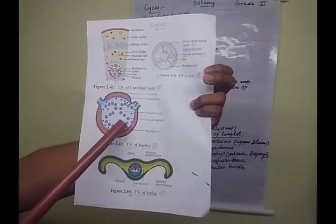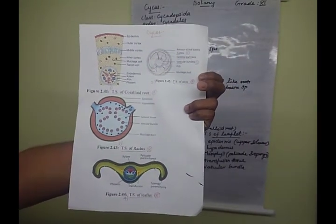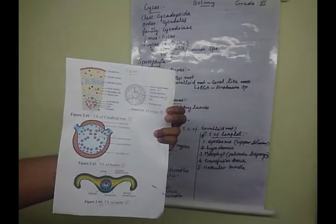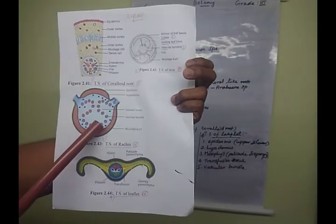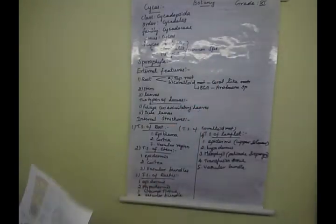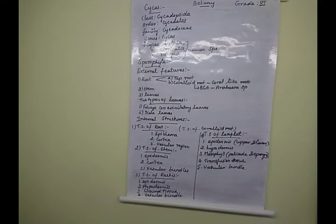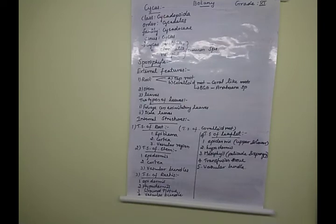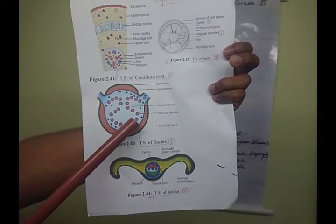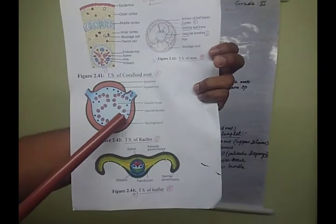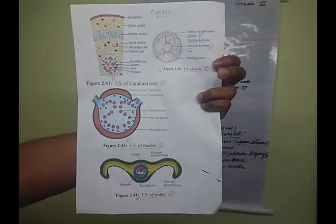Each vascular bundle is surrounded by a single layer of sclerenchymatous cells. This sclerenchymatous layer surrounding the vascular bundle is called the bundle sheath cells. So the bundle sheath cells are sclerenchymatous cells covering each individual vascular bundle.